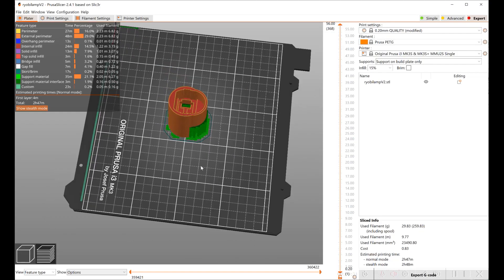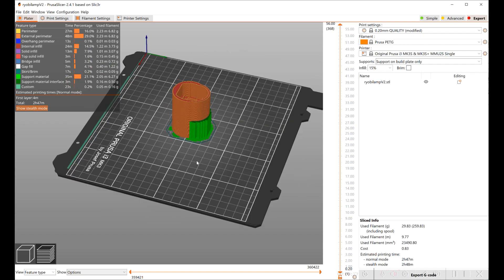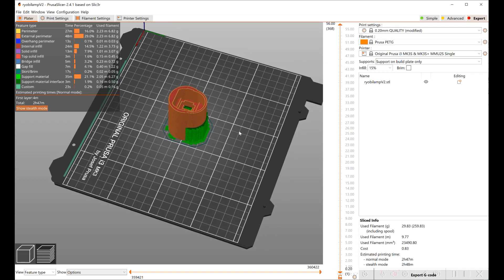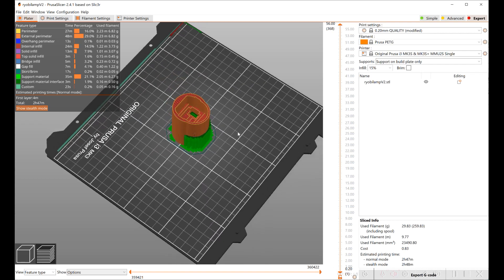I've loaded the part into the Prusa slicer. I'm using support on the build plate and I'm using PETG, and I went with the 0.2 quality setting instead of the speed setting because I wasn't quite sure how well the thread would do.